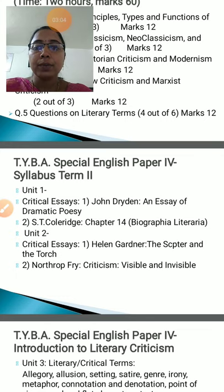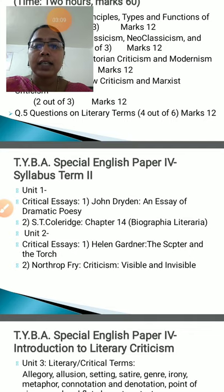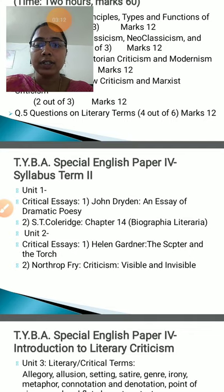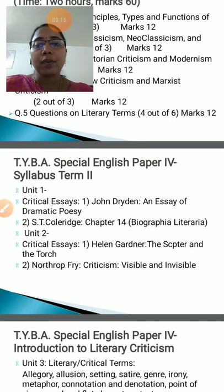The first essay is John Dryden's An Essay of Dramatic Poesy. The second is S.T. Coleridge's chapter number 14, which is taken from Biographia Literaria.